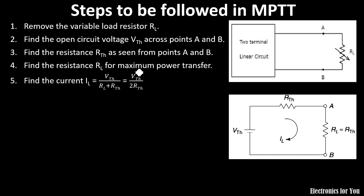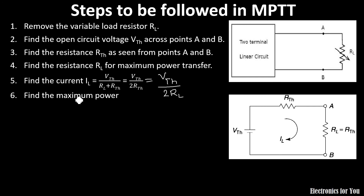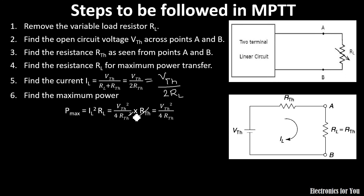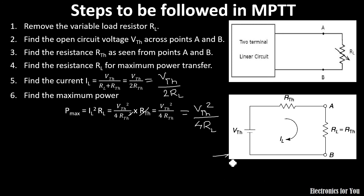The current flowing through the circuit is IL equals VTH divided by (RTH plus RL). Since RL and RTH are equal, this becomes VTH upon 2RTH or VTH upon 2RL. The maximum power Pmax equals IL squared times RL. Substituting and simplifying — since RL equals RTH — the final formula is Pmax equals VTH squared upon 4RTH, or equivalently VTH squared upon 4RL. These are the steps to be followed.